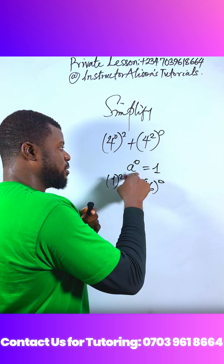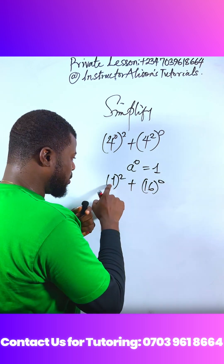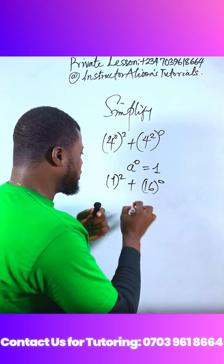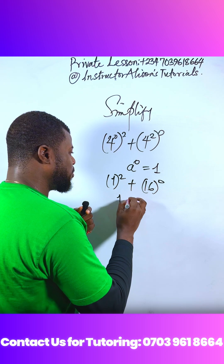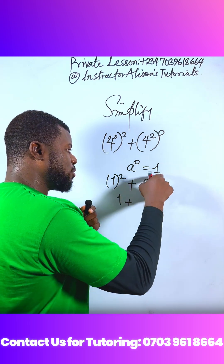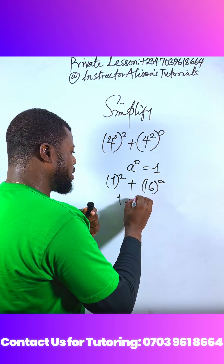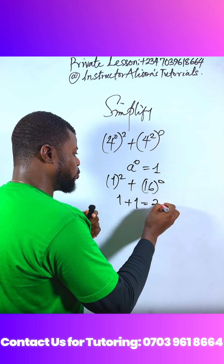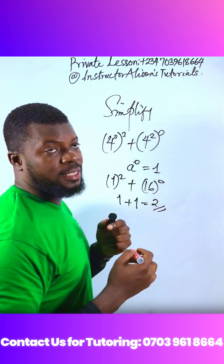This is the power of 0; this one can resemble this one again. But 1 squared means 1 times 1, so it will be 1 plus 16 to the power of 0, now 1. So 1 plus 1 will give you 2, and we define the answer.